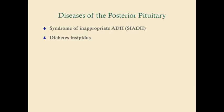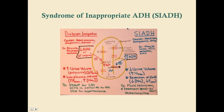ADH is a hormone that promotes the preservation of water from the kidneys. What ADH does is promote the insertion of aquaporins in the collecting duct, which is in the nephron in the kidney. Aquaporins allow water to be reabsorbed from the hypertonic filtrate that will eventually become urine. The collecting duct is the last stage of the nephron.